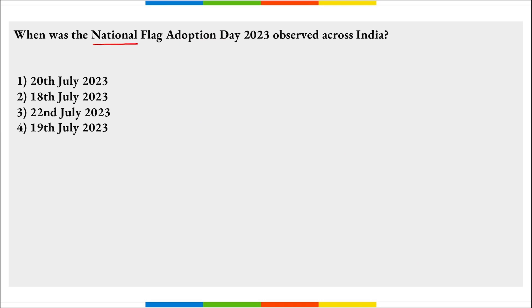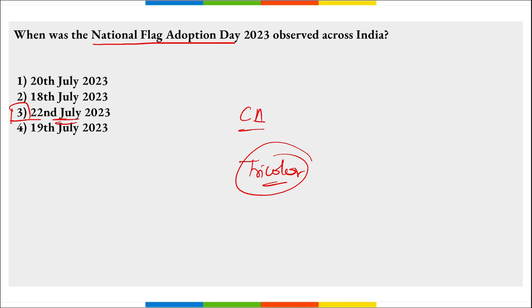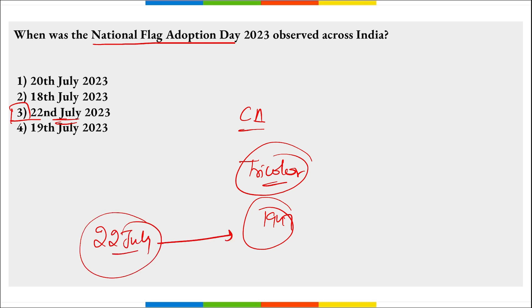When was National Flag Adoption Day observed? On 22nd of July, we observe National Flag Adoption Day to commemorate the day the Constituent Assembly adopted the tricolor. India adopted its national flag on 22nd July 1947. Our national flag was designed in 1923 by Pingali Venkayya.